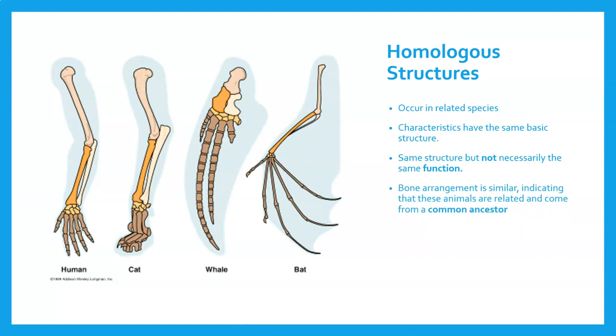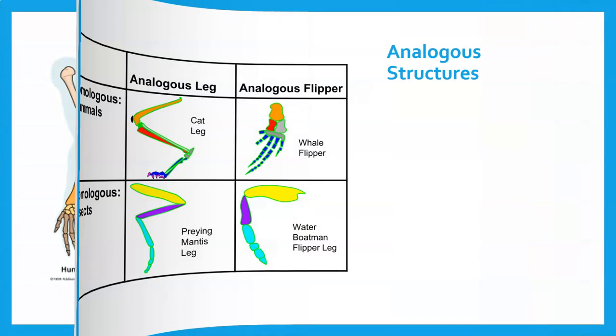The bone arrangement is quite similar, indicating that these animals are closely related or have a common ancestor.